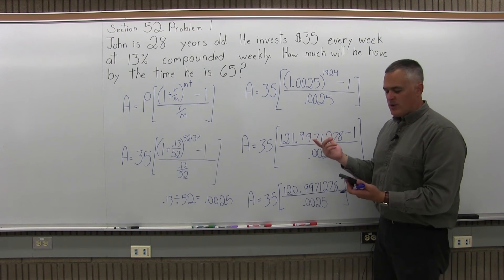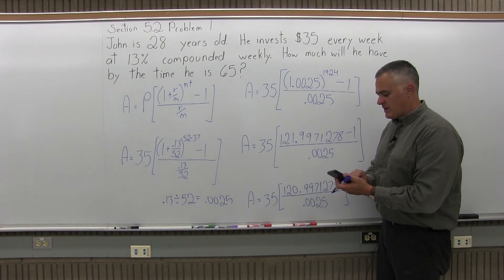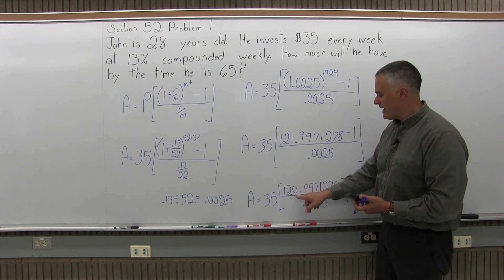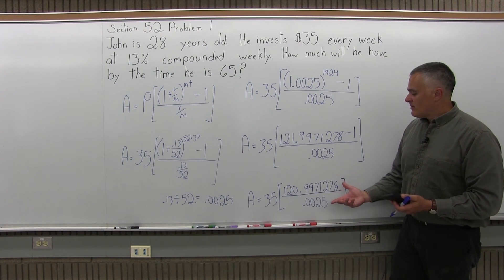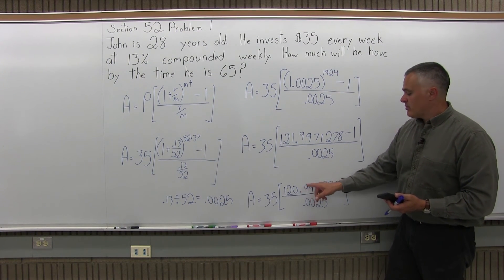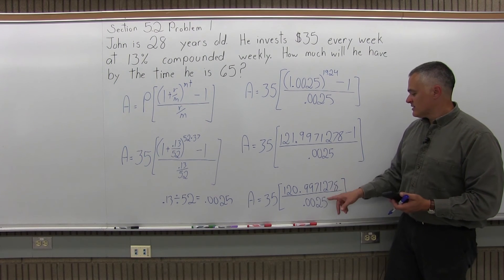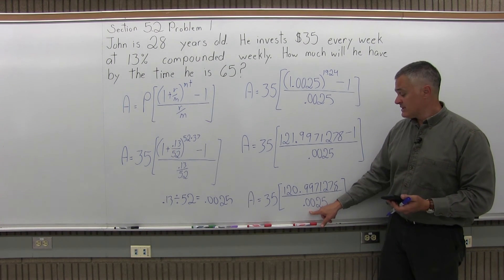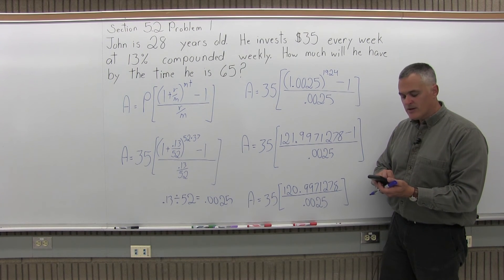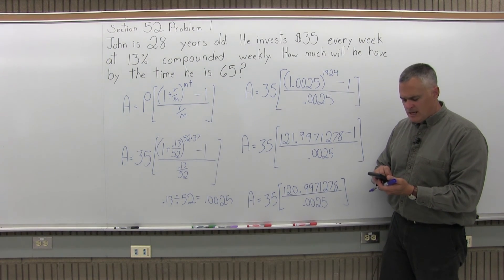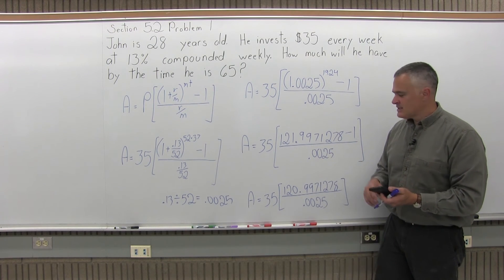So I have the 121 on the screen of my calculator now, let me just go minus 1 so it'll say 120.9971278. And to finish the work in the brackets, I'm going to take the 120.9971278 that's on the screen of the calculator, divide it by .0025. And the calculator tells me that it is 48,000 and something, and it's still times the 35 in front.